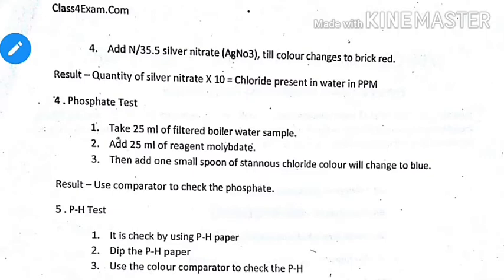A reserve of phosphate should be maintained in the boiler water to neutralize any hardness or scale formation. For the phosphate test: take 25 mL of filtered boiler water sample, add 25 mL of molybdate reagent, then add one small spoon of stannous chloride — the color will change to blue. Use a comparator to check the phosphate level.